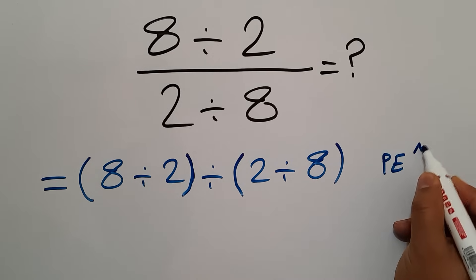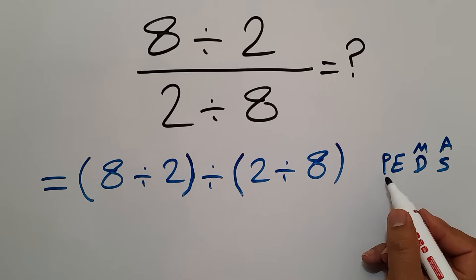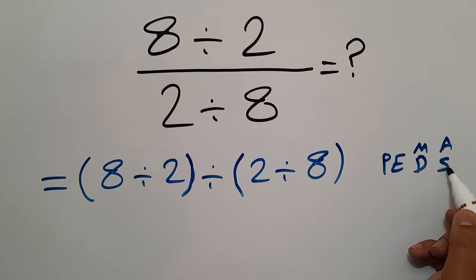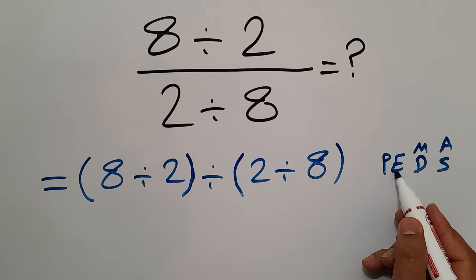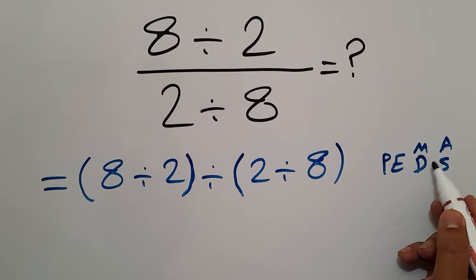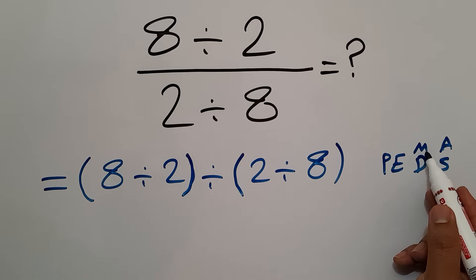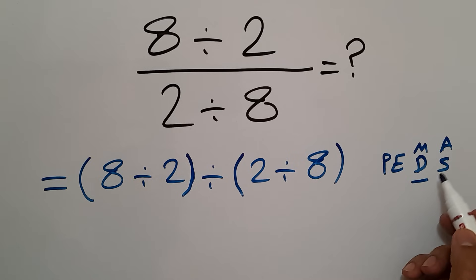P stands for parentheses, E stands for exponents, M and D stand for multiplication and division, and A and S stand for addition and subtraction. We do parentheses first, then exponents, then multiplication or division, and finally addition or subtraction. Remember that multiplication and division have equal priority, evaluated from left to right, and the same applies to addition and subtraction.